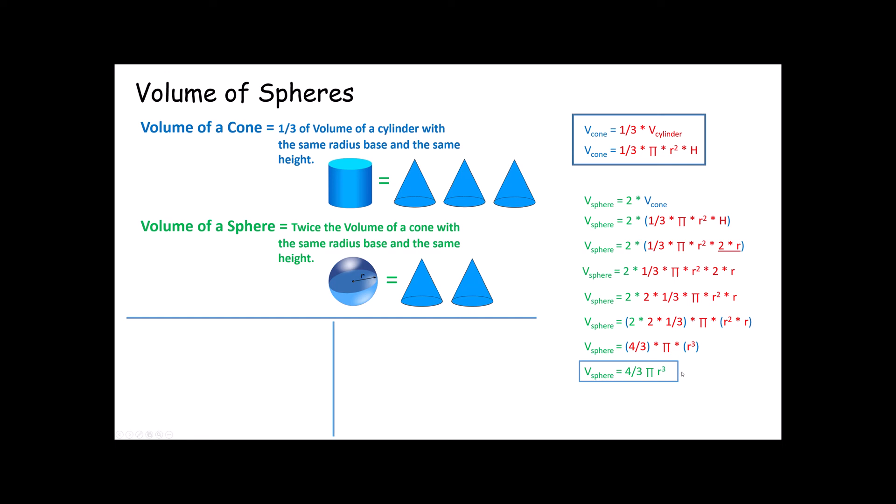There is a reason behind it. And the reason is, a sphere is two cones, and a cone is one third of a cylinder. And so I just use a little substitution, then a little bit of algebraic manipulation to get my formula. The good news is, that's the hard part, and you don't even have to do that.